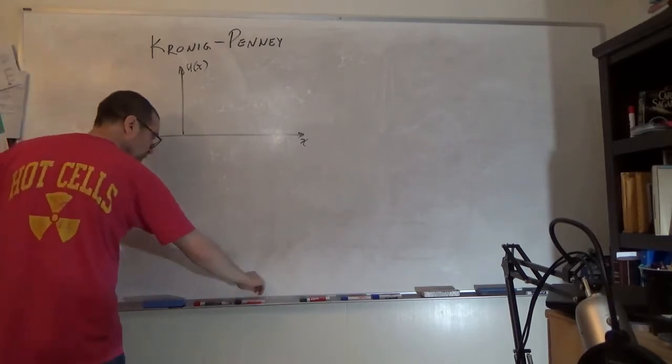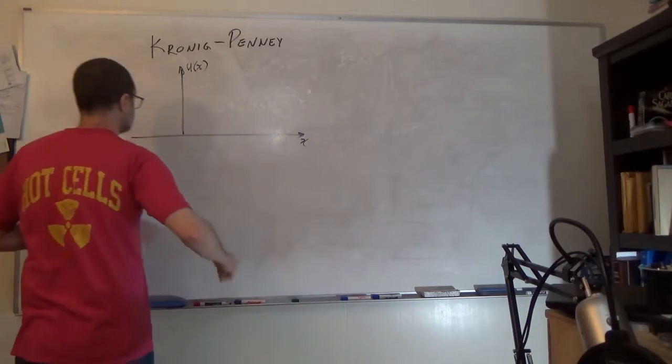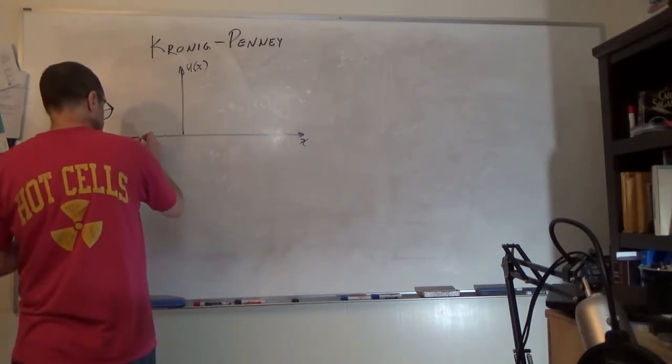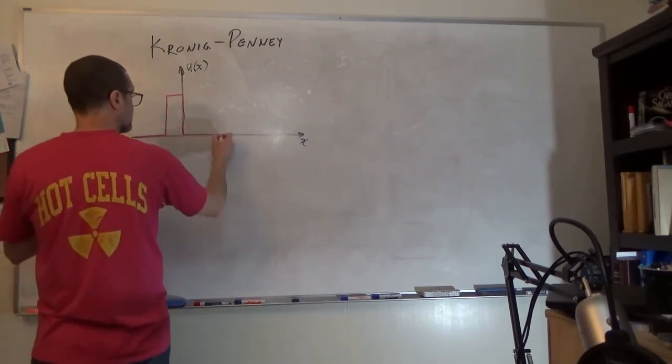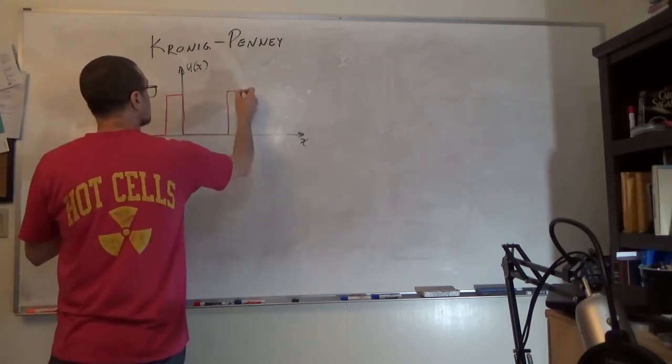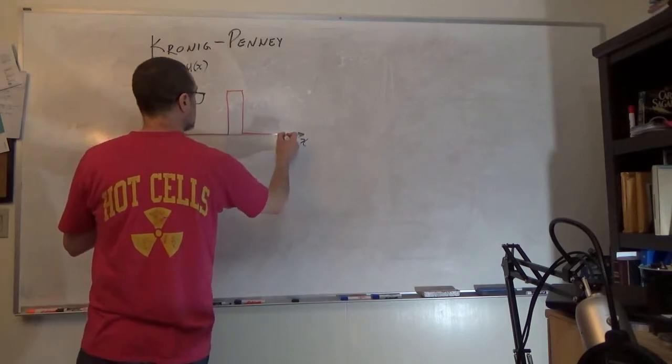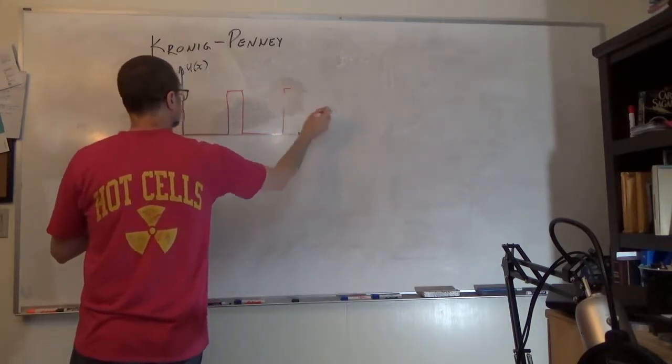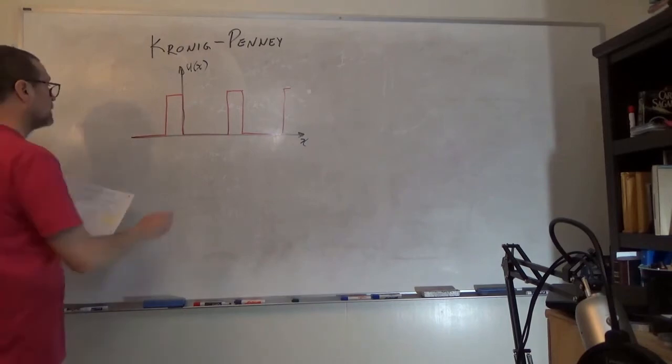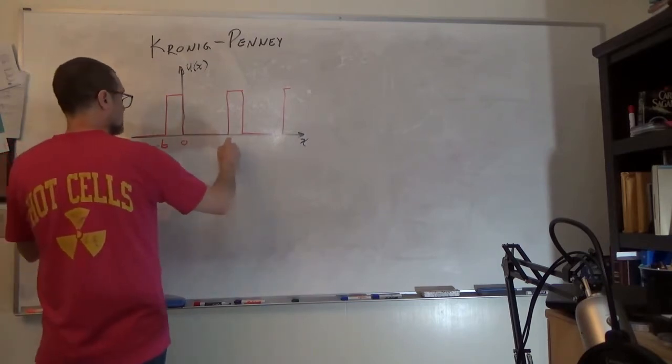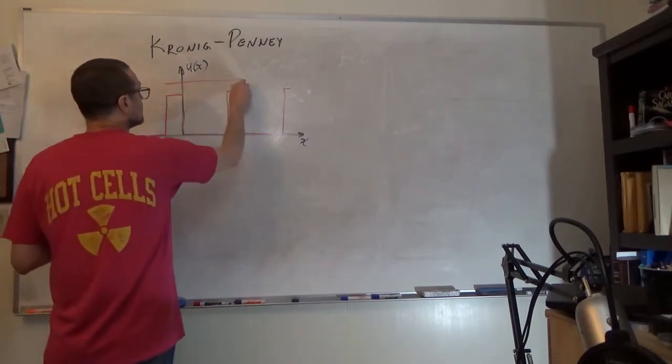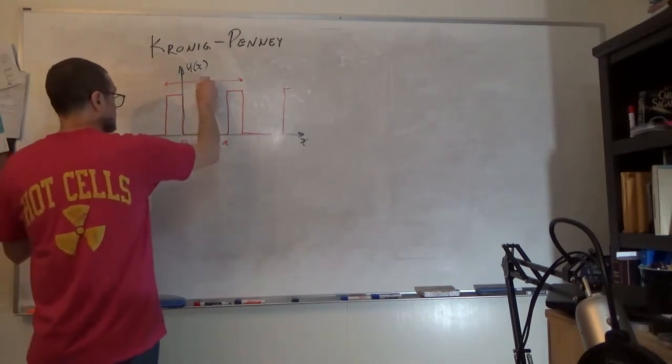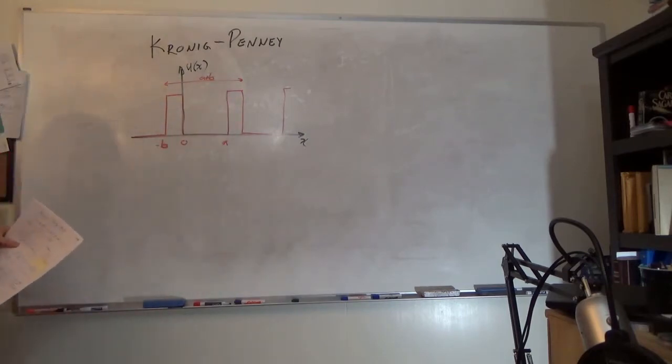We're going to define barriers that pop up every so often, and it goes on infinite. That's going to be negative b, 0, a. So our periodicity is going to be a plus b is the length of the period.